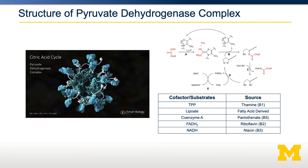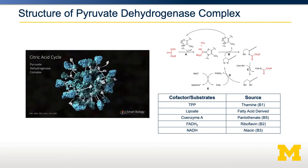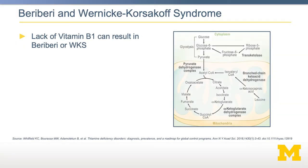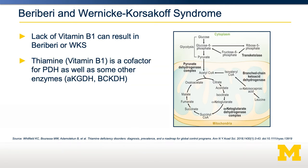We're going to focus on thiamine deficiency, which is important for TPP as a cofactor. There are two major diseases associated with thiamine deficiency: beriberi and Wernicke-Korsakoff syndrome. In both of these, there's a physiological deficiency in vitamin B1 resulting in an inability to make thiamine pyrophosphate. This TPP is a cofactor for PDH as well as several other enzymes, including alpha-ketoglutarate dehydrogenase and branched-chain ketoacid dehydrogenase, which are important for amino acid metabolism.